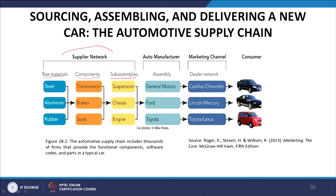Raw material suppliers provide steel, aluminum, and rubber, while component suppliers supply transmission systems, brakes, and engines. All of these are supplied to the automotive manufacturer for assembly — General Motors, Ford, and Toyota. In the marketing channel, the dealer network plays the key role: General Motors provides cars to Cadillac or Chevrolet dealers, Ford Motor Company provides Lincoln or Mercury to Ford dealers, and Toyota provides Toyota and Lexus to Toyota or Lexus dealers, who then sell to the final consumers.